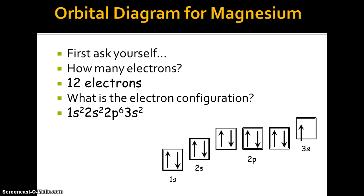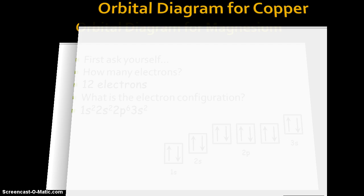Excellent. And then our 3s, 2. So one pointed up, one pointed down. Now if you count all those arrows, we should have 12. Yay! All right, good.